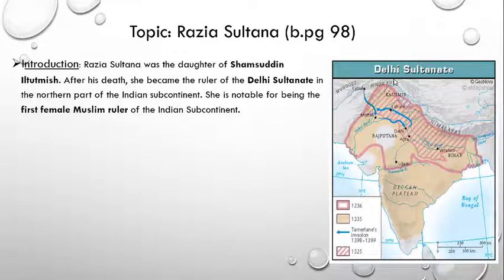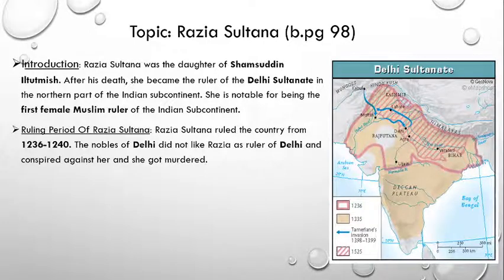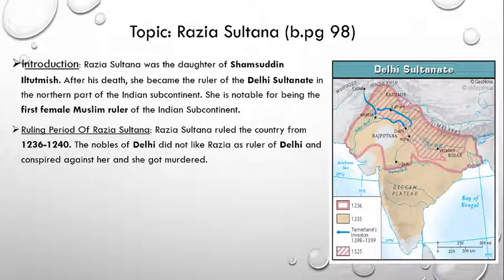Here is a map of the Delhi Sultanate. This whole region was part of the Delhi Sultanate ruled by Razia Sultana after the death of her father Il Thutmish. Razia Sultana ruled the country from 1236 till 1240. The Nobles of Delhi didn't like Razia as a ruler and conspired against her, and she got murdered. Nobles were people who belonged to a higher class and enjoyed privileges given to those close to royal families. As a ruler, Razia had a strong personality and made several important positive changes in the government. But the Nobles didn't like to be governed by a woman, so they plotted against her and she got murdered. This is how the time period of Razia Sultana came to an end.